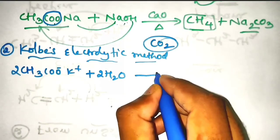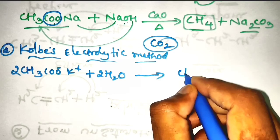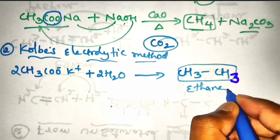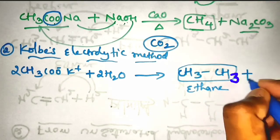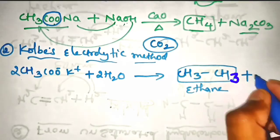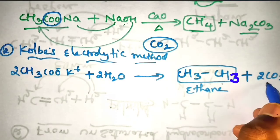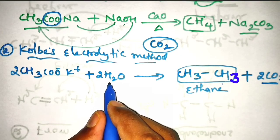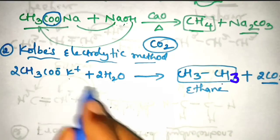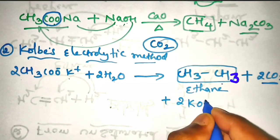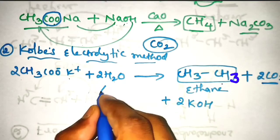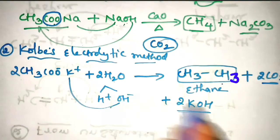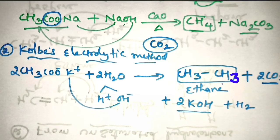With 2H2O, it will be converted into CH3–CH3 — that is ethane — along with 2CO2, and further products include H2, 2H2O, and 2KOH. 2OH⁻ combines with 2K⁺ and converts into 2KOH, and H2 is also produced.